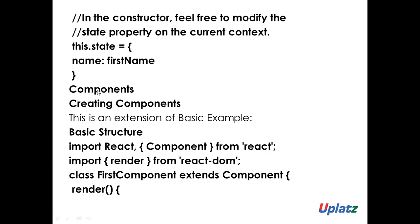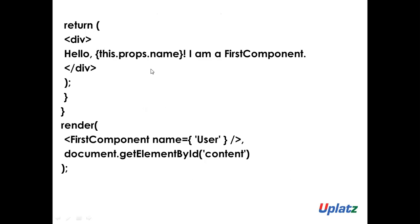Next topic is how to create components. In ReactJS, everything is a component. If in a web page you need to create a header and a footer, the header is one component and the footer is another. The basic structure: import React, Component from 'react', render 'react-dom'. I have FirstComponent extending Component, rendering this.props.name with 'I am a first component'. Inside render, with FirstComponent name as 'User', using document.getElementById, the output will be 'User, I am a first component'.